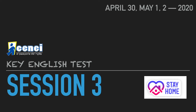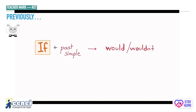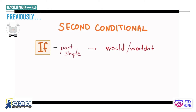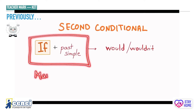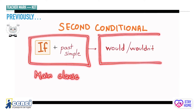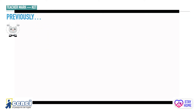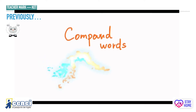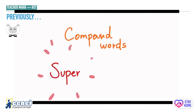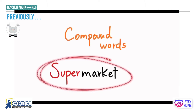Now let's just remember what we saw during the last class. Previously we were talking about the second conditional. We have the second conditional with the main clause and the result clause. The second conditional is about future or imaginary situations — things that are almost impossible or difficult to happen. Also during the last class, we learned about compound words, which are simply words made from two or more words. For example, supermarket — super and market together.